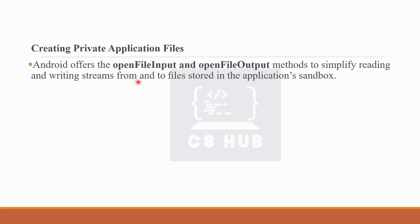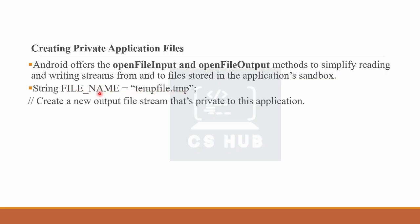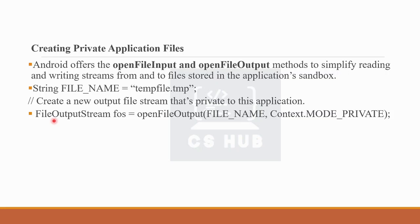For creating private application files, Android offers openFileInput and openFileOutput methods. These simplify the reading and writing of file streams. For example, you can create a FileOutputStream: FileOutputStream fos = openFileOutput(fileName, mode); and a FileInputStream: FileInputStream fis = openFileInput(fileName); openFileOutput takes two parameters: the file name and the open mode.